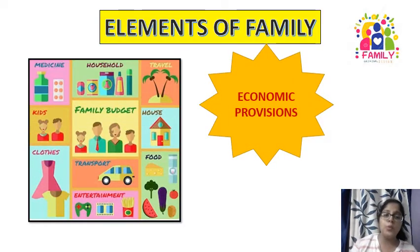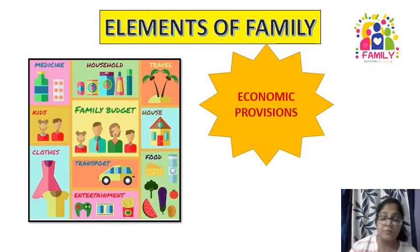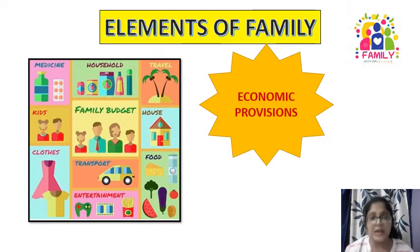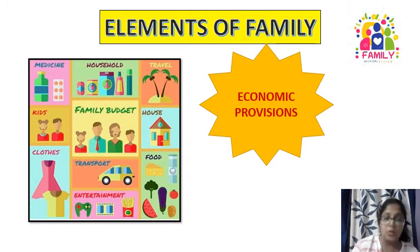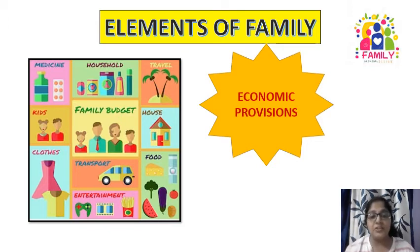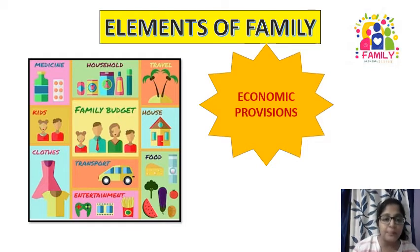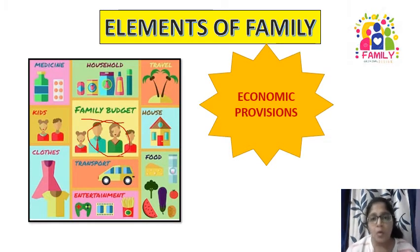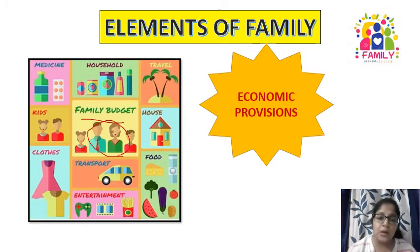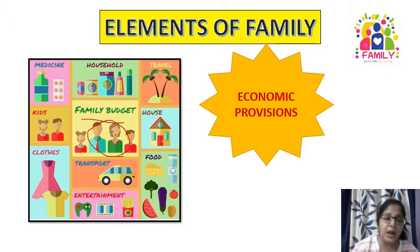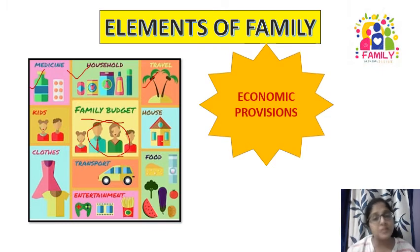Next is economic provisions. The family provides all the amenities — medicine, clothes, household needs, travel, food, a house to stay — and maintains a family budget. Along with that, we also have entertainment and transport. This family budget comes from the income of either one member or different heads of the family, and there is one head who controls the economic provisions. Without this, we can't have any of these, so it is an important element of family.